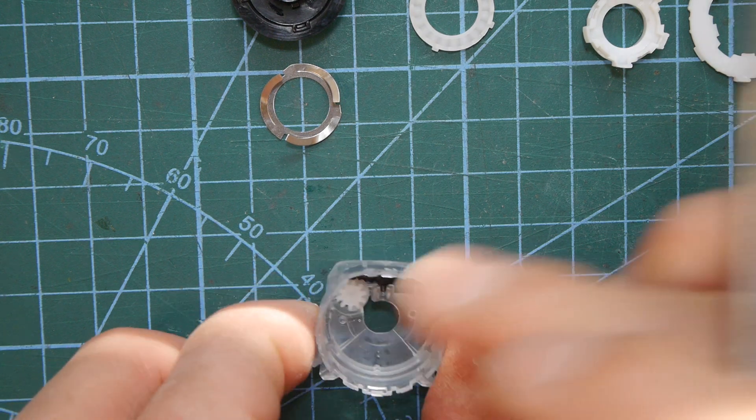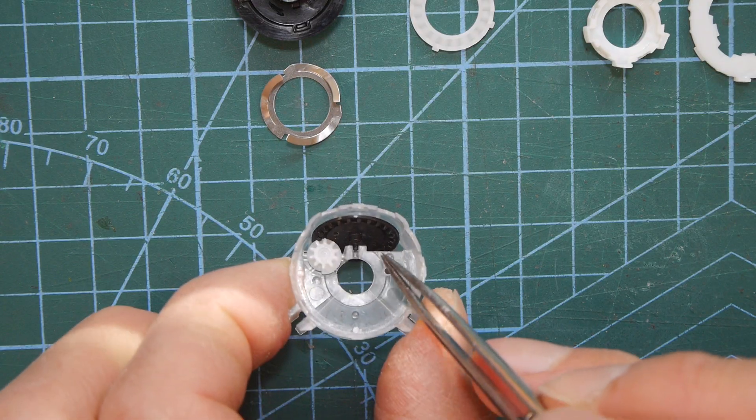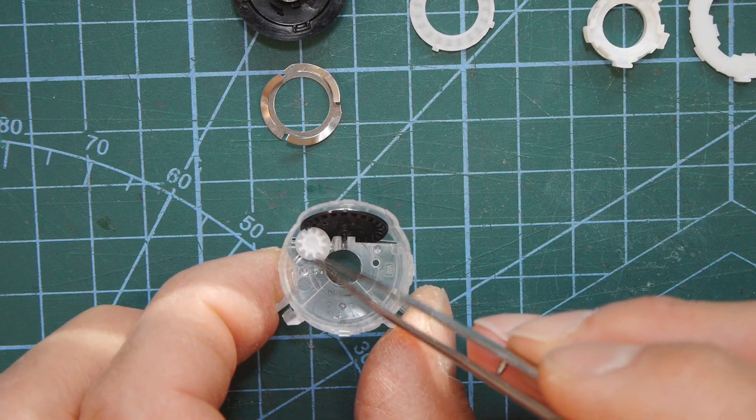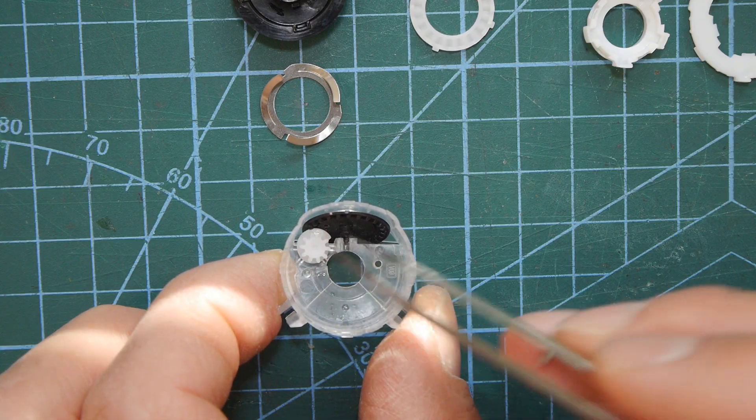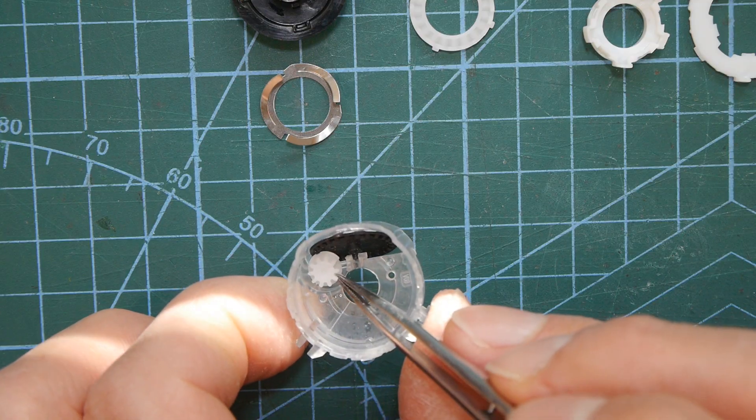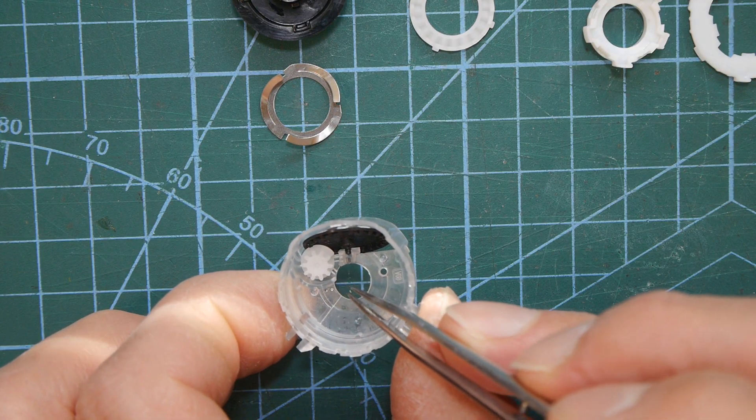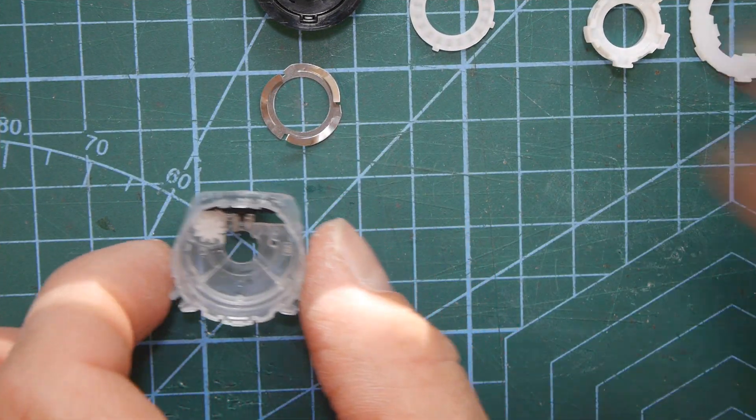So you're now aware that to turn the dial that does the counting you need to connect to this little gear here and rotate that, and that will rotate the worm drive that drives the counter wheel. But how do we rotate this little gear? So I'll show you how that works now.